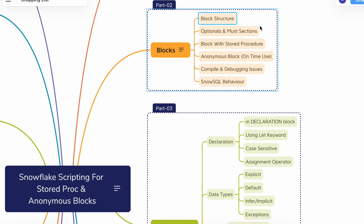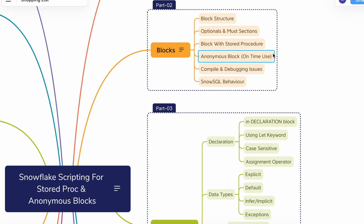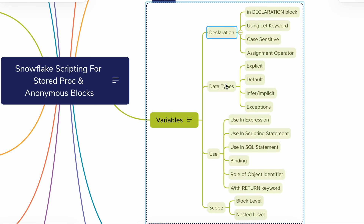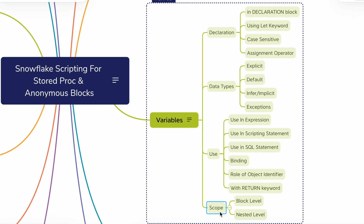We have understood the block structure construct, the optional and required sections, keyword case sensitivity, the structure of stored procedures versus anonymous blocks, different compilation issues and error codes, and changes required when executing Snowflake scripts using SnowSQL CLI. In the next chapter, we will discuss variables, data type support for variables, how to use them, and variable scope. Be sure not to miss the upcoming hands-on tutorial on writing Snowflake scripting using variables.